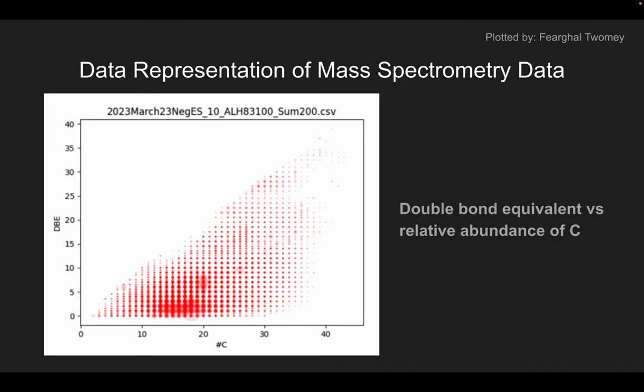Comparing the double bond equivalent or DBE with the number of carbon atoms tells us about the size of the molecules as well as the degree of unsaturation present. Thus, DBE is zero for saturated compounds and increases as the molecules become increasingly unsaturated.